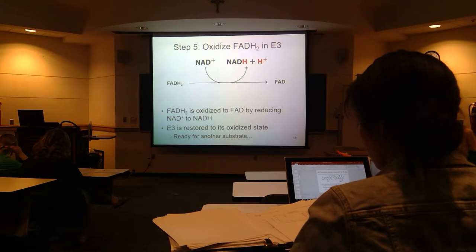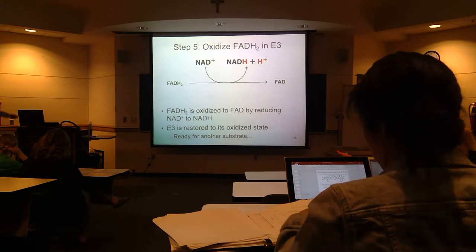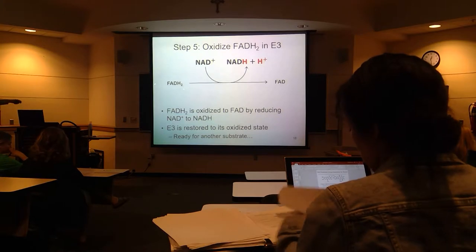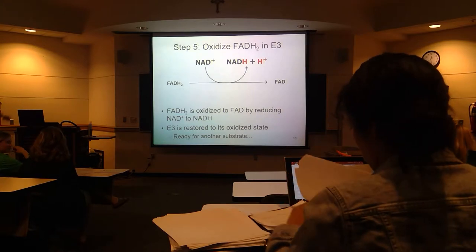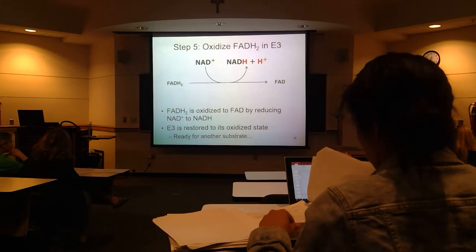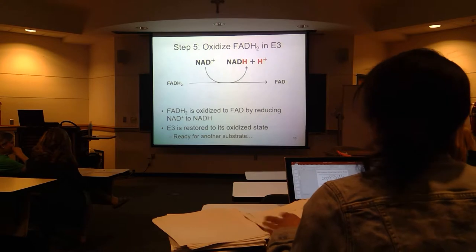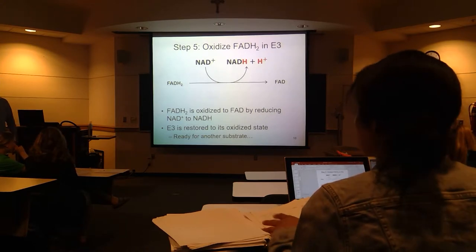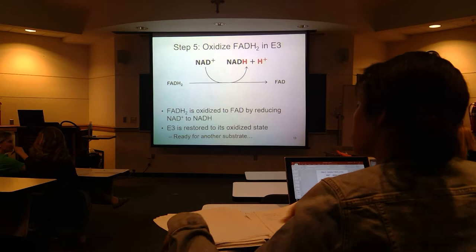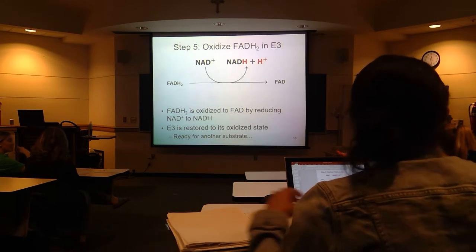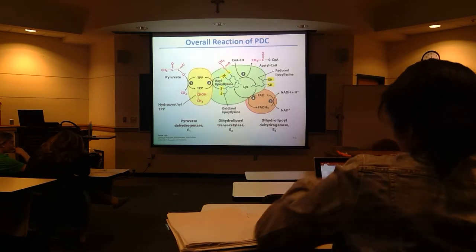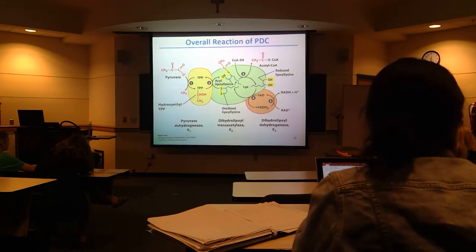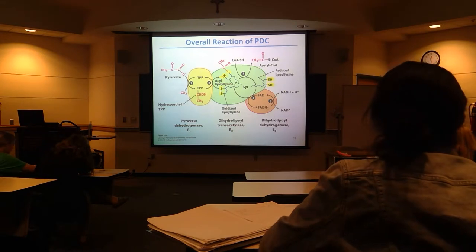Technically this is another product of this complex — we produce NADH, and that will leave the complex. FAD is going to just stay in the complex. So now everything is back to its normal state. We produce acetyl-CoA from pyruvate. So this is just a summary of what all these steps are.